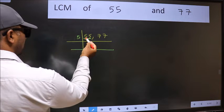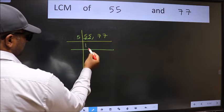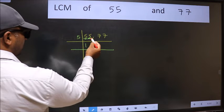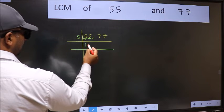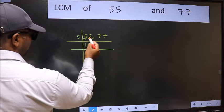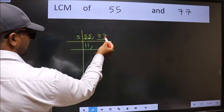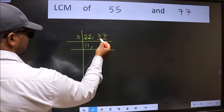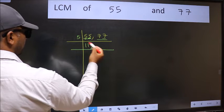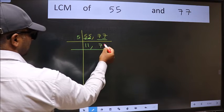First number 5, when do we get 5 in 5 table? 5 once 5. The other number 5, when do we get 5 in 5 table? 5 once 5. The other number 77, last digit is neither 0 nor 5, so this number is not divisible by 5. So you write it down as it is.